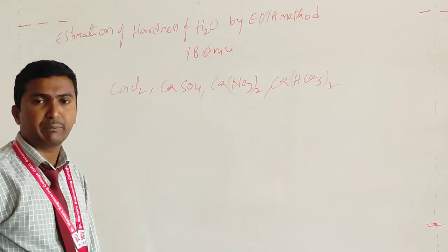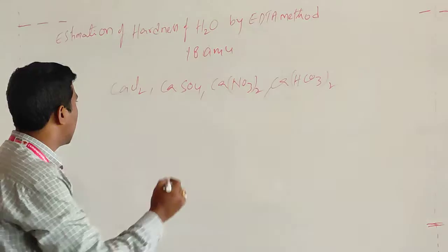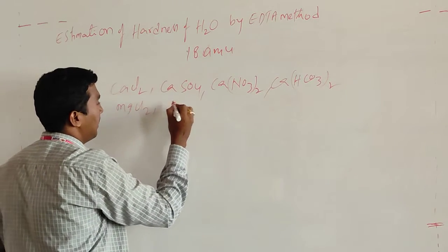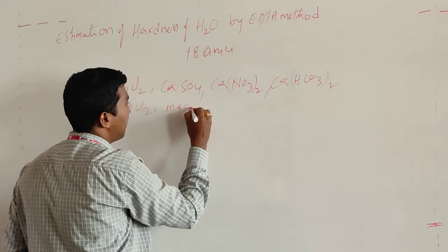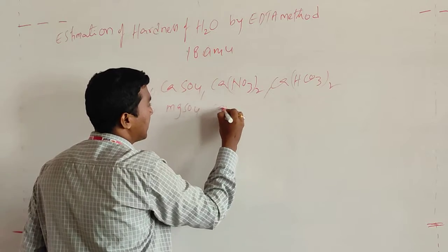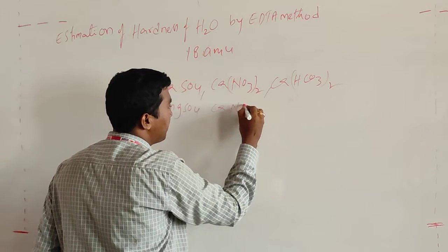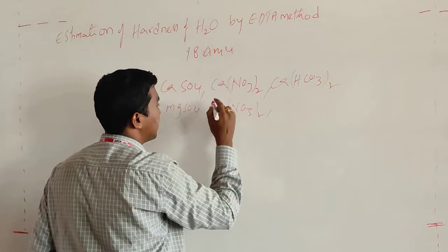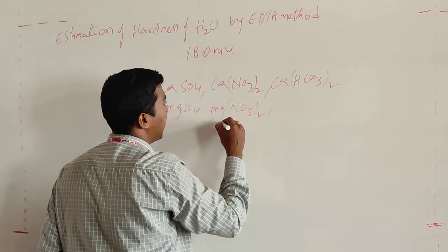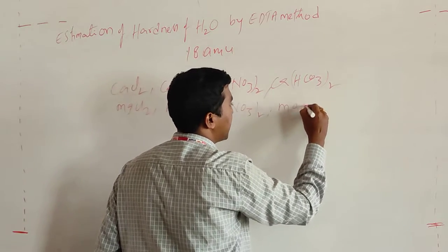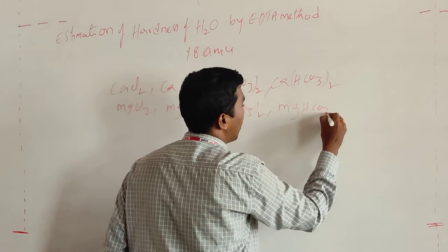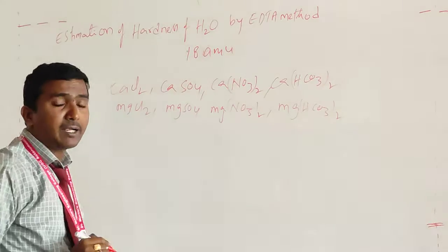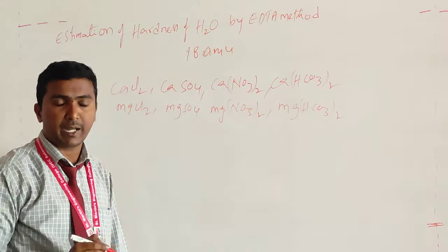What are the magnesium-related salts? The magnesium-related salts are: magnesium chloride, magnesium sulfate, magnesium nitrate, and magnesium bicarbonate. These are the hardness-causing salts.